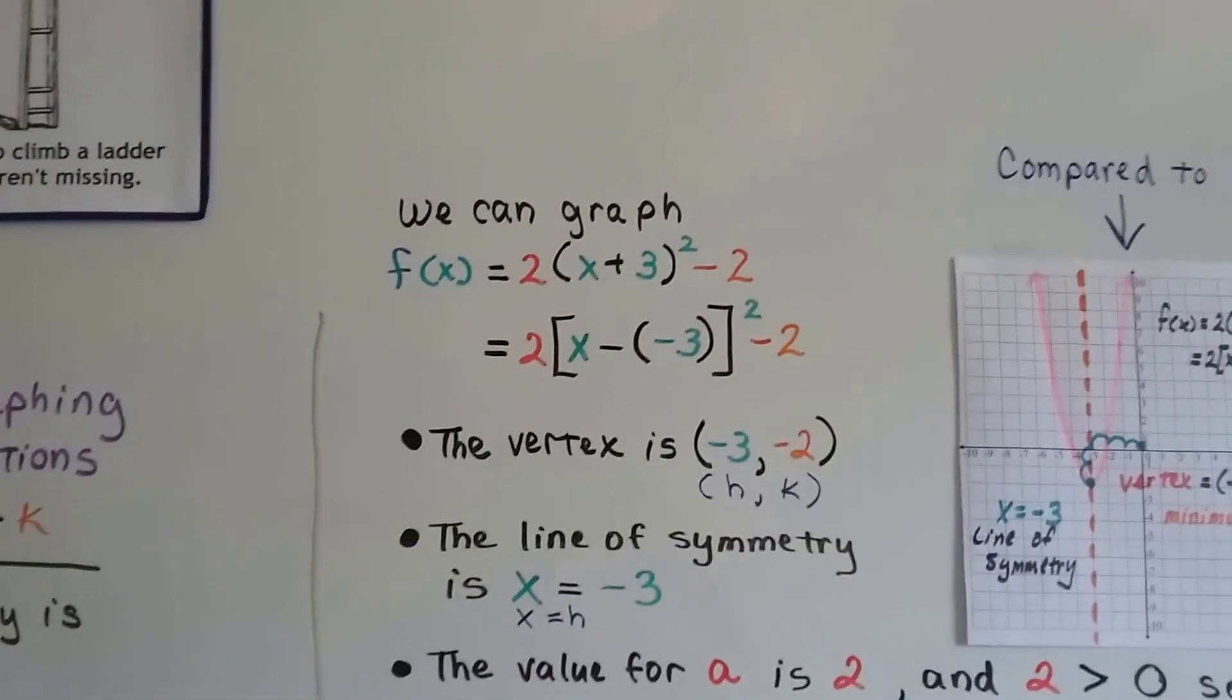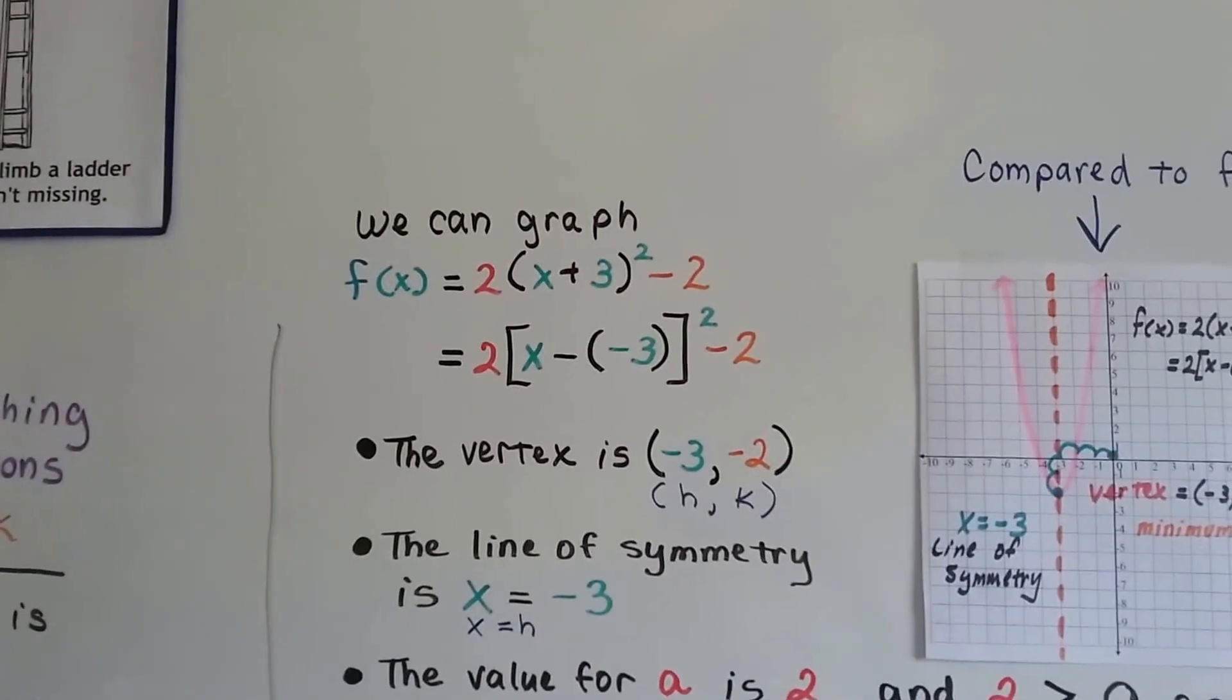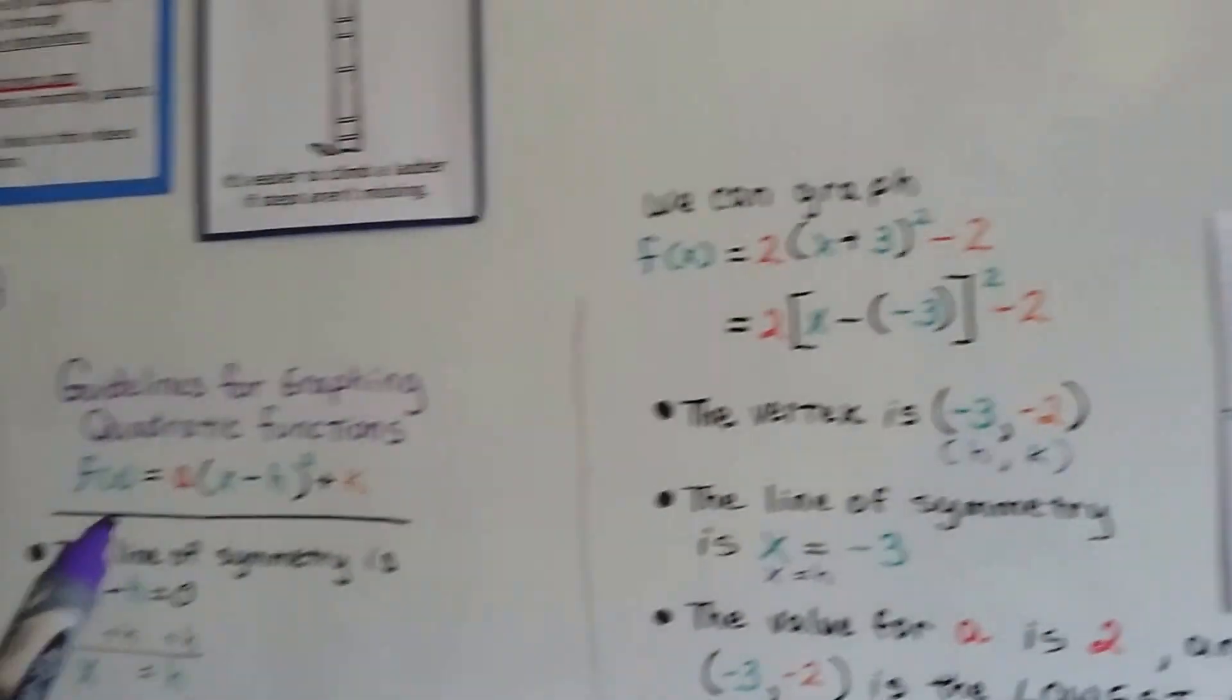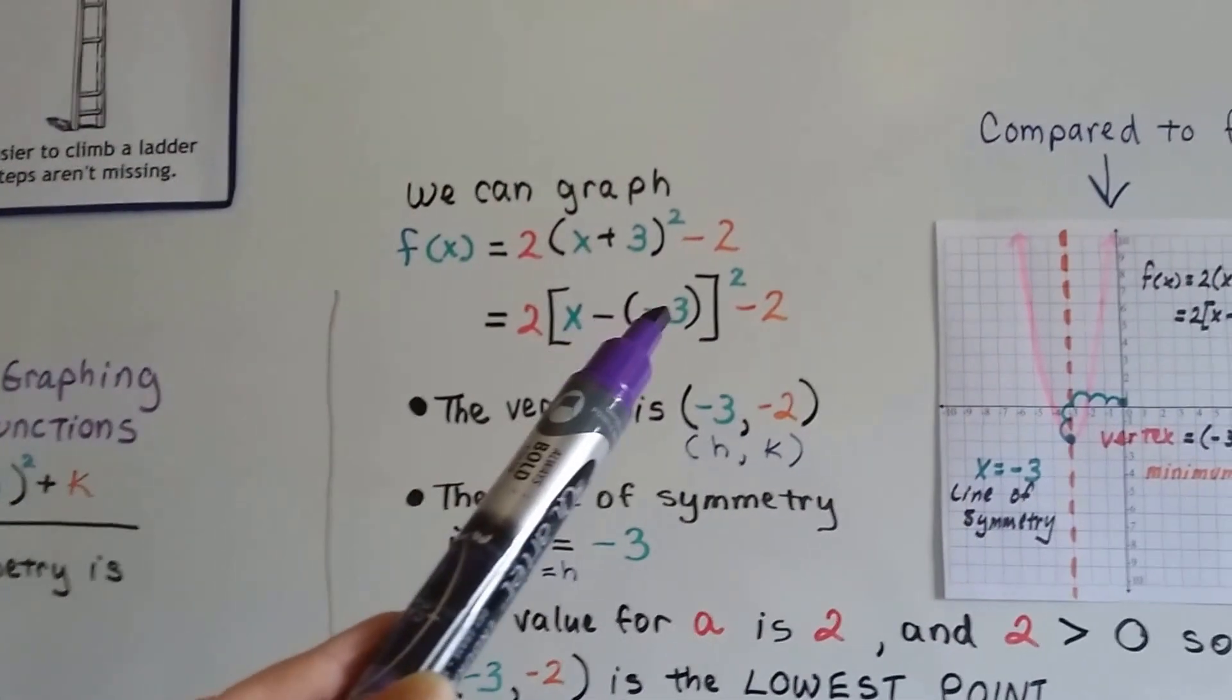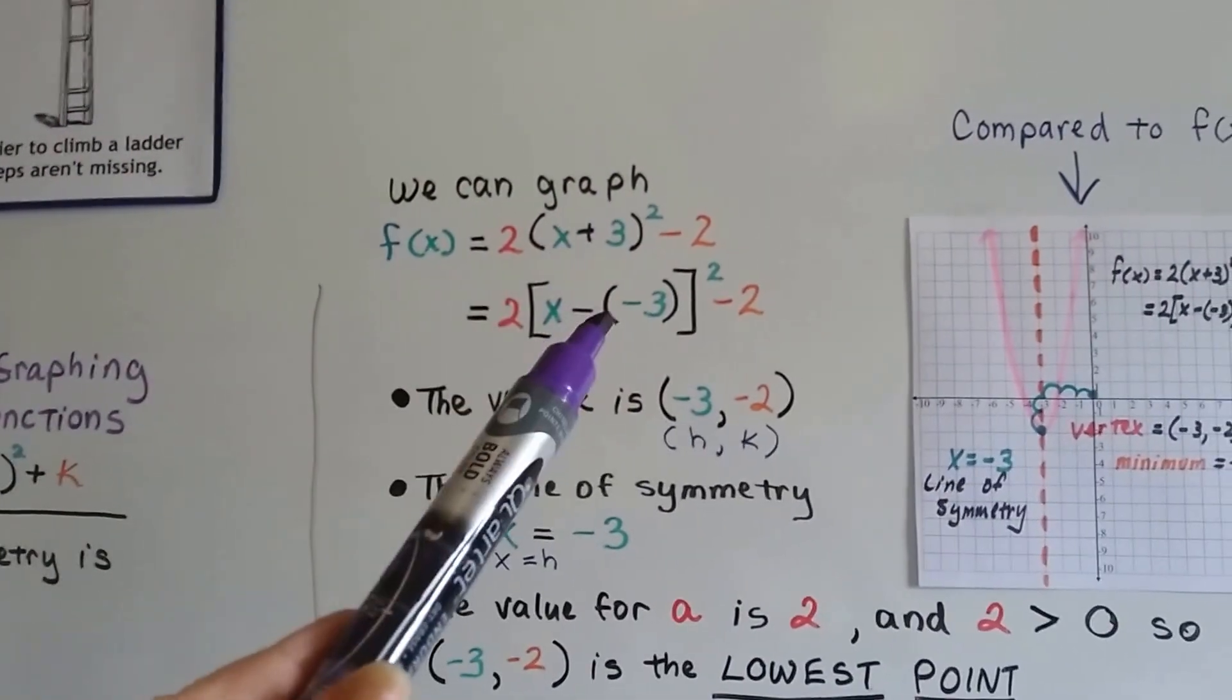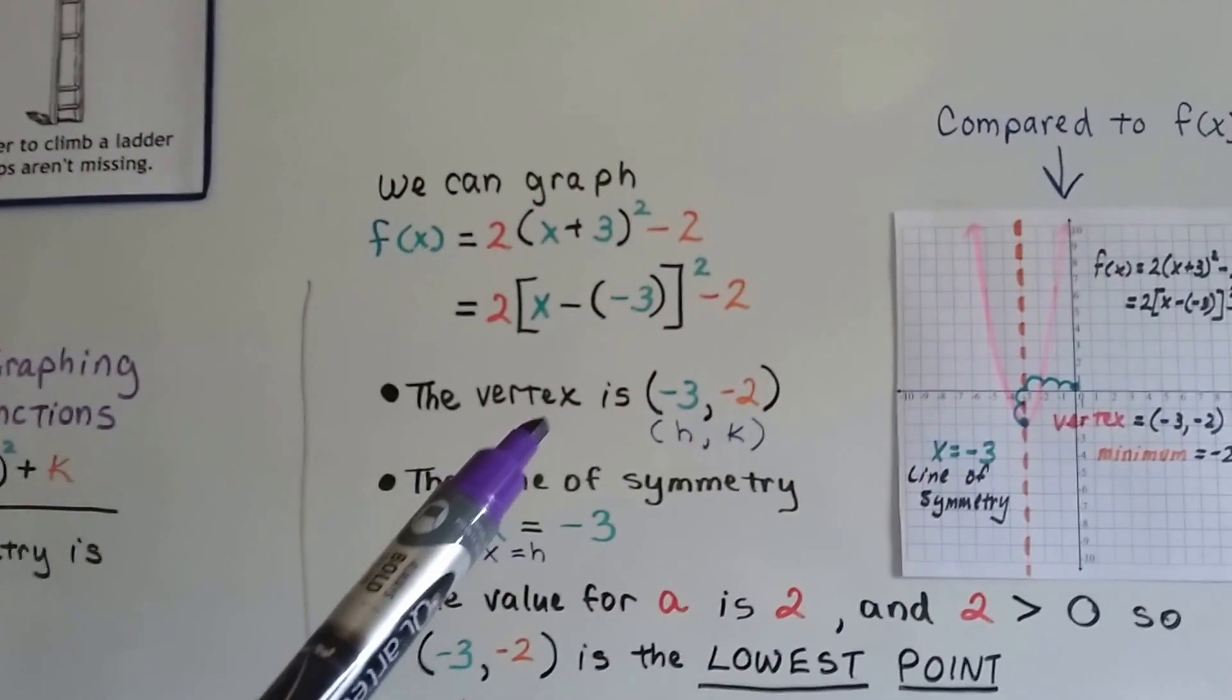So, we can graph the function f(x) = 2(x + 3)² - 2. Because this is an x - h, what we can do is say x - (-3), because that would make a positive three, wouldn't it?